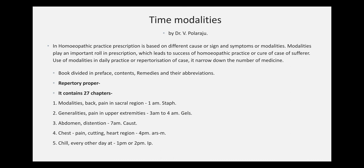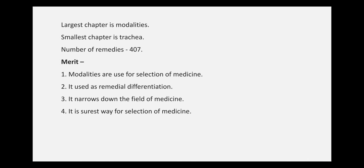The book Time Modalities by Dr. V. Polaraju is divided into a preface, contents, remedies and their abbreviations, and a repertory proper containing 27 chapters. A few examples: back pain in the sacral region at 1 AM — remedy Staphysagria; generalities, pain in upper extremities at 3 AM to 4 AM — medicine Gelsemium. The largest chapter in this repertory is Modalities; the smallest chapter is Trachea. The total number of remedies is 407.